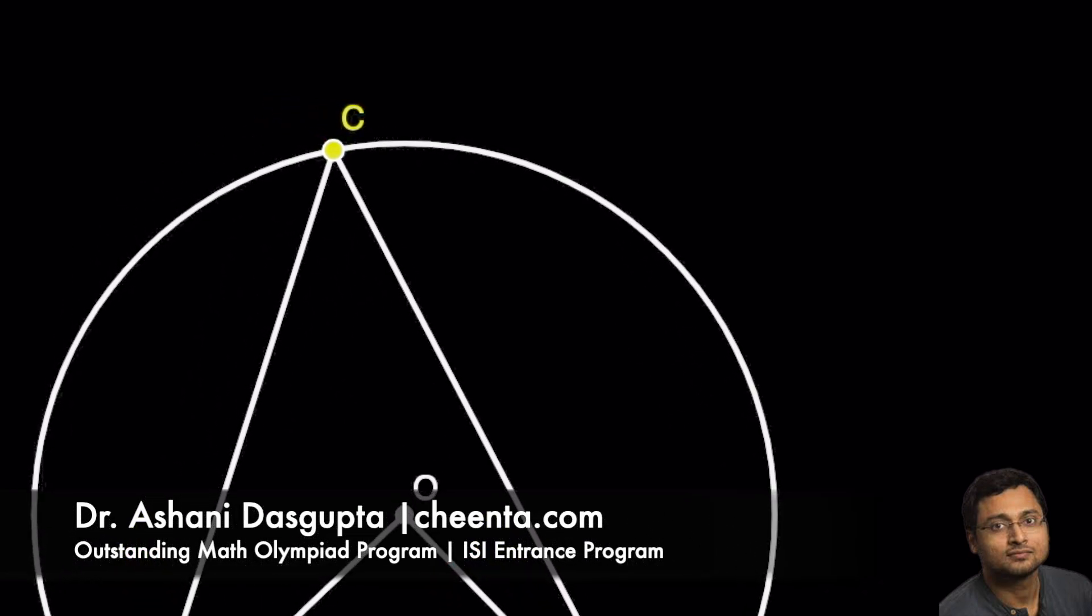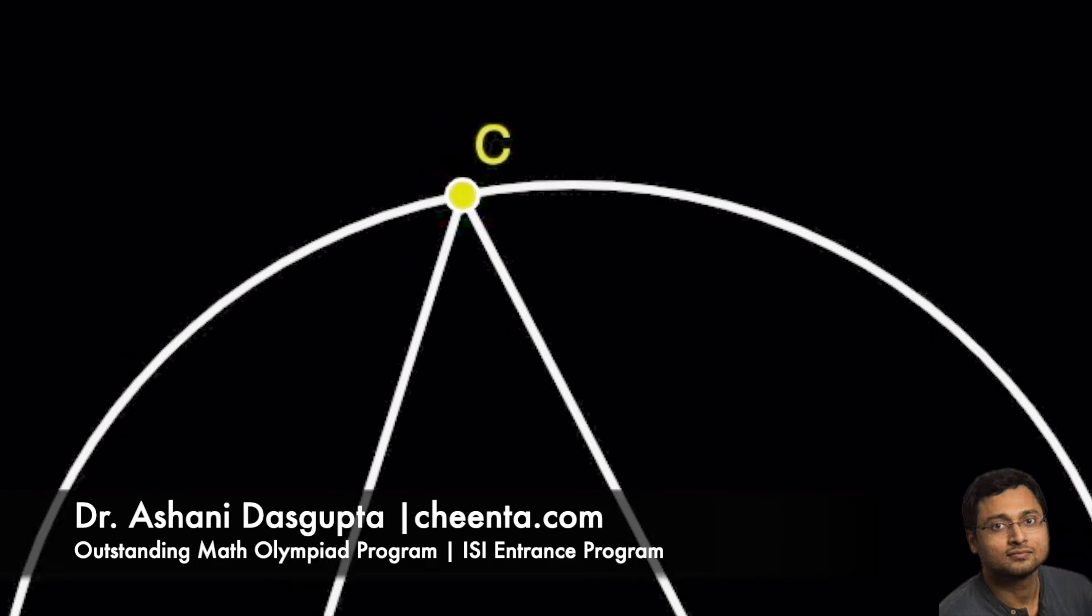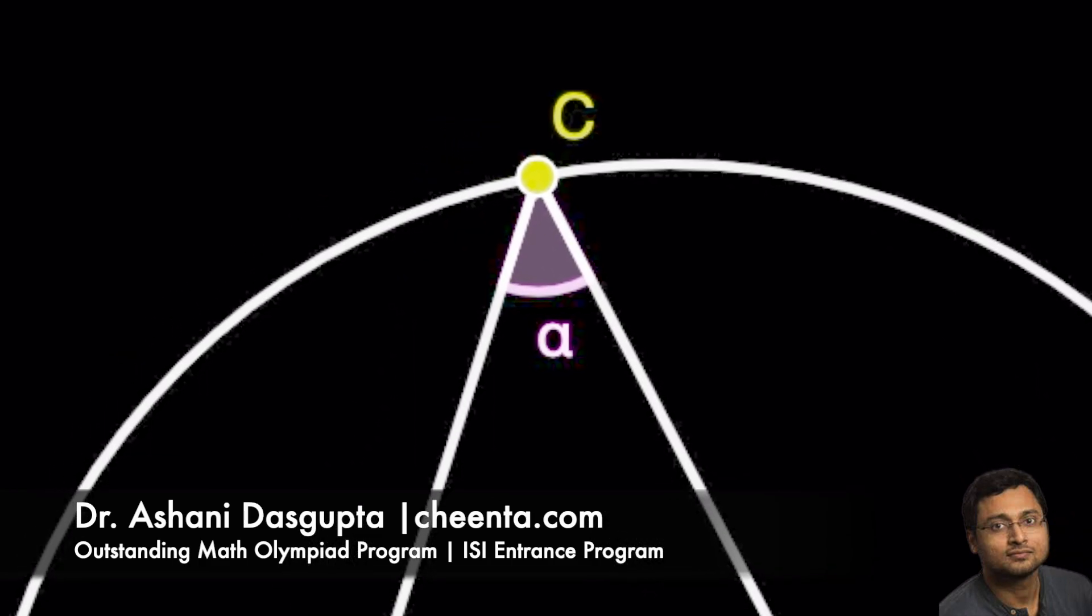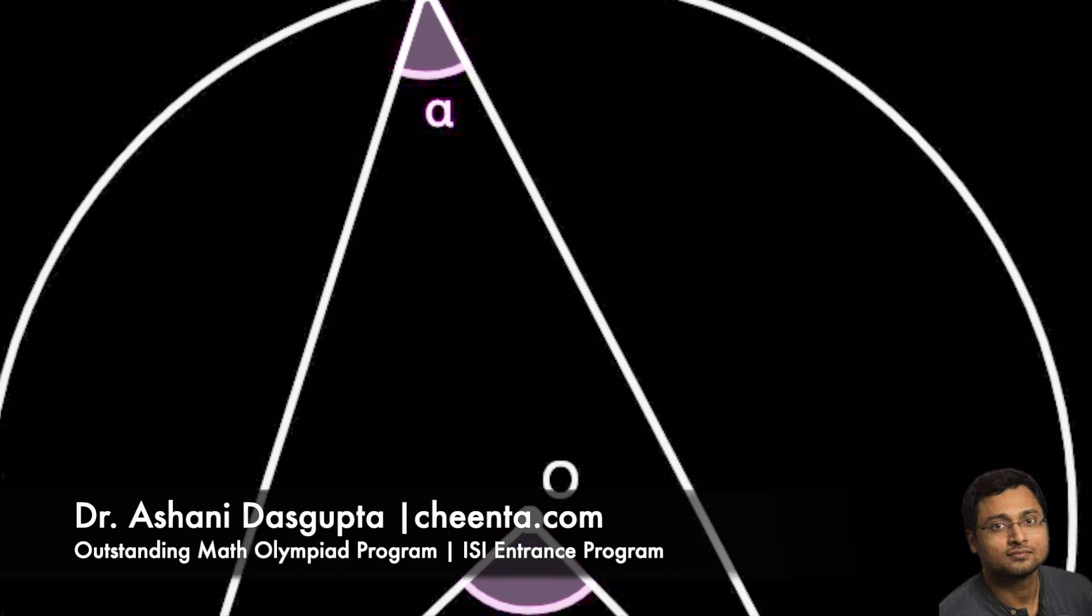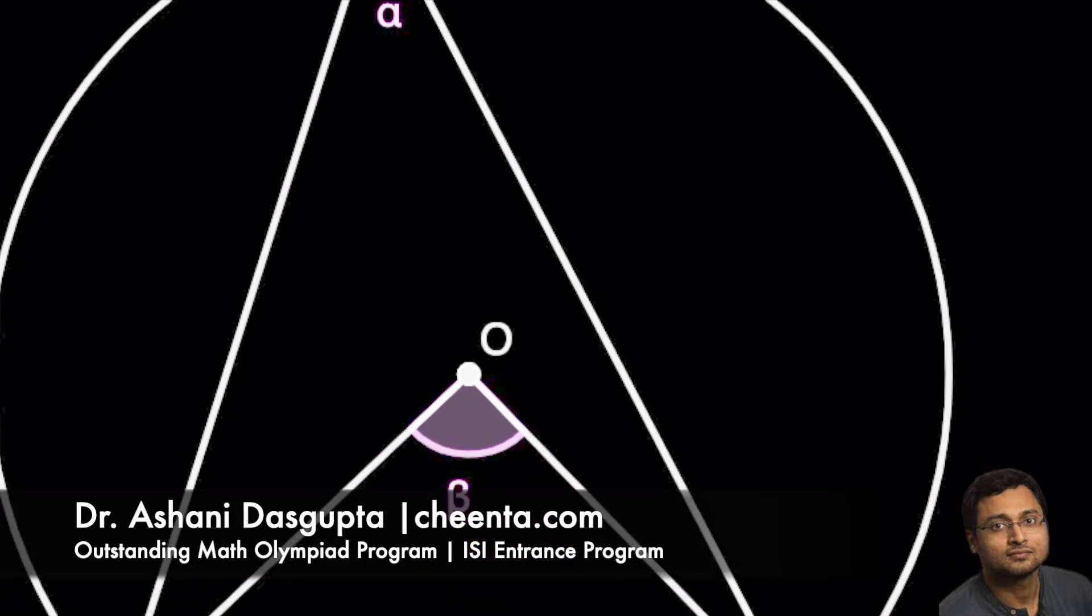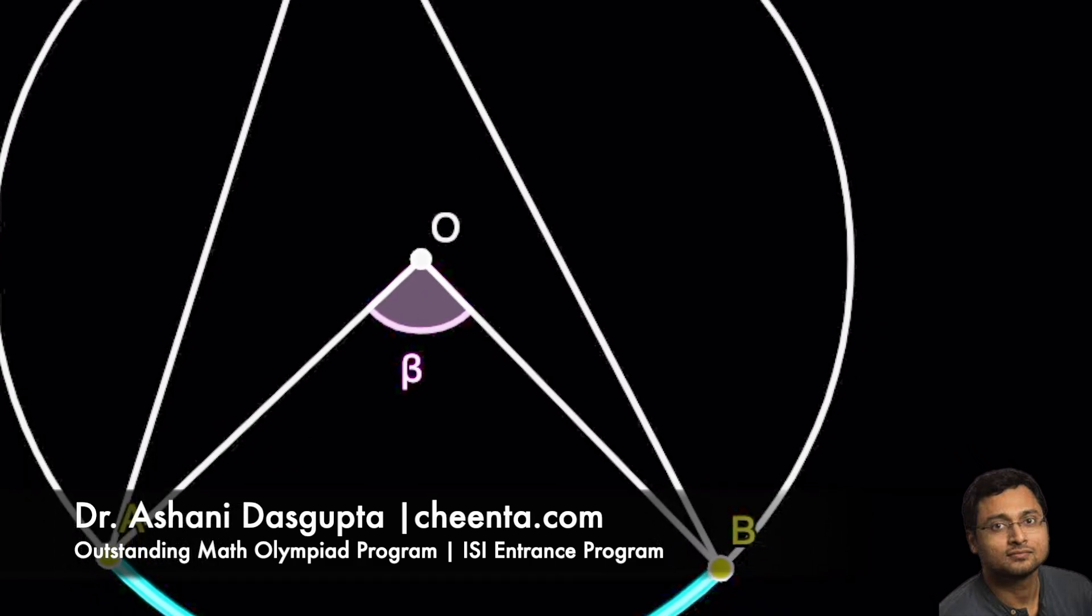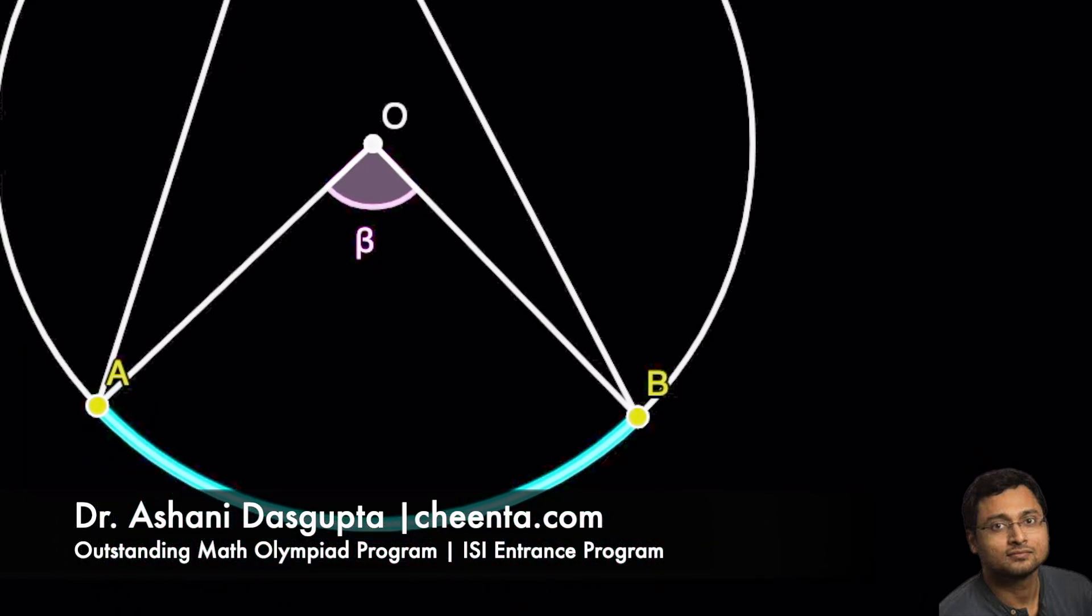Now, there is a very important relation between this angle at the circumference, which is alpha, with the angle at the center, which is beta. There is a well-known theorem that angle at the center beta is twice the angle at the circumference.